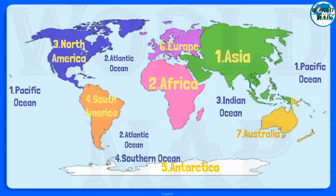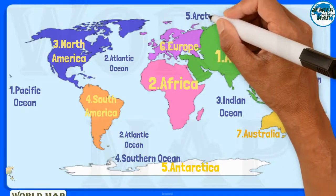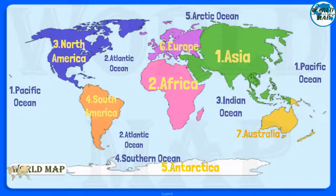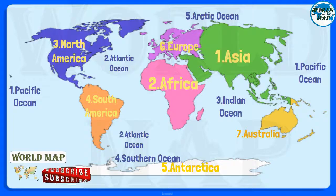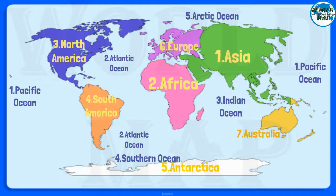Number 5: Arctic Ocean. The Arctic Ocean is the world's smallest and shallowest ocean of all five oceans. Further to this, it is the coldest and least salty ocean.